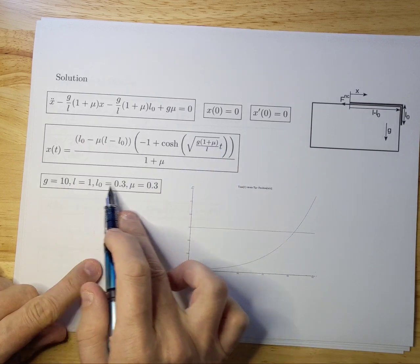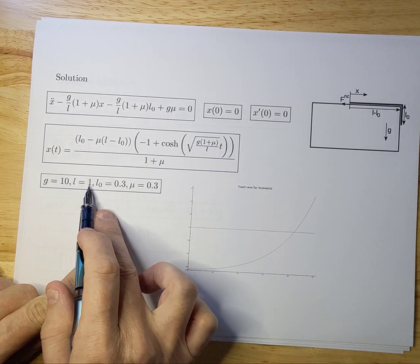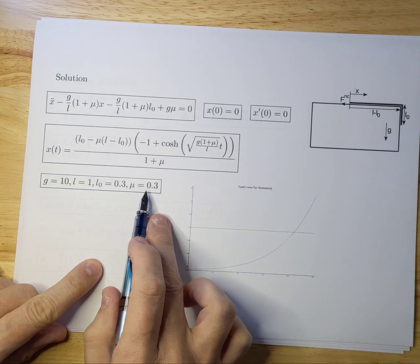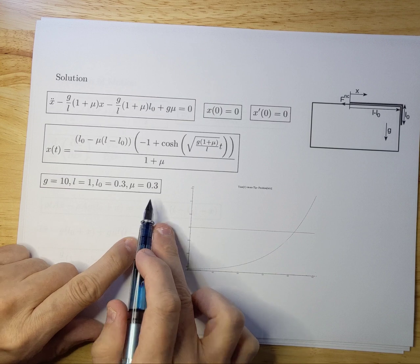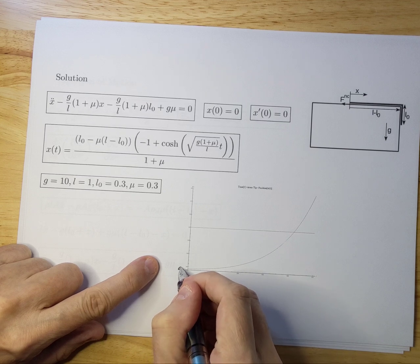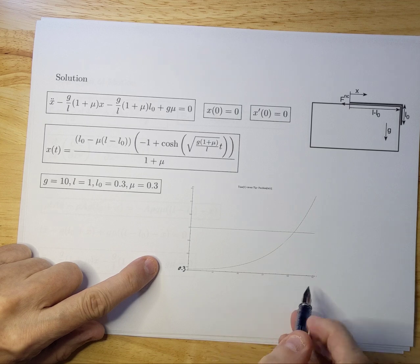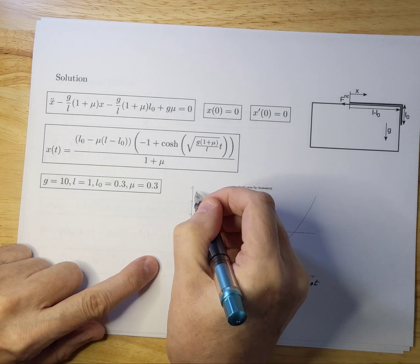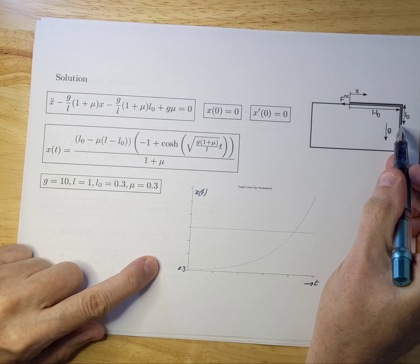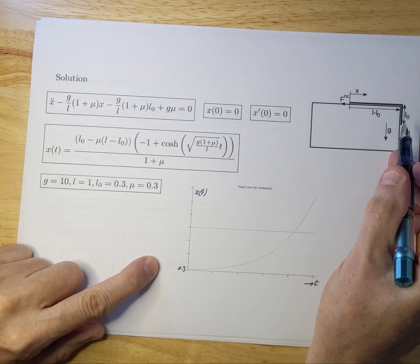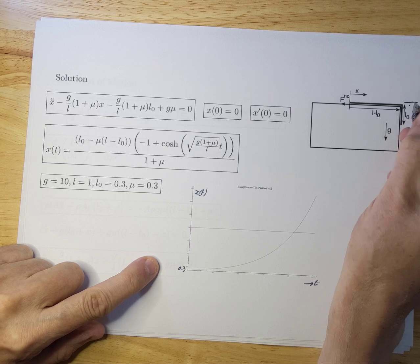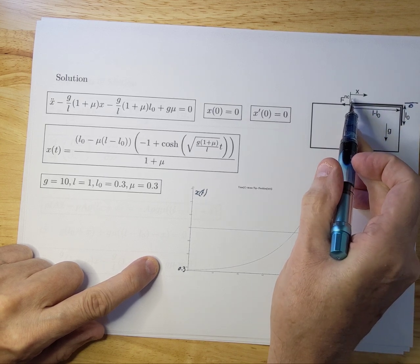I plugged in some numbers to get a little feel for how it works. I plugged in G is 10, L equals one. So the total chain length is a meter. L zero is 0.3 meters. So that's this piece. And the friction coefficient is also 0.3. If you do that, you see that it starts at 0.3. It's hard to see, but this is 0.3 here. And then it starts accelerating over time. This is your time axis over here. And this is your X. But my X is not this X, but it is the tip of this chain here over here. That is what I'm following. So at T is zero, it's already at 0.3 meters. And this is now my zero point.